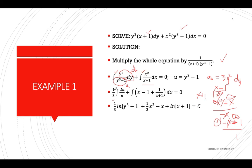The integral gives 1/3 times ln(y cubed minus 1) plus x squared over 2, the integral of negative 1 is negative x, and this term gives ln(x plus 1). Then you should have your arbitrary constant on the right-hand side.